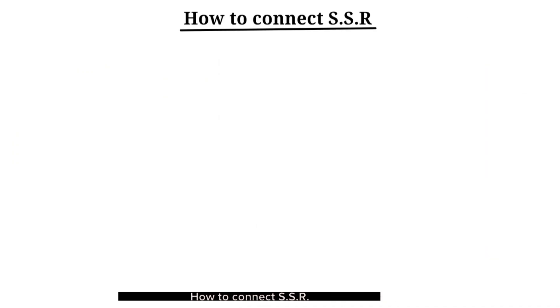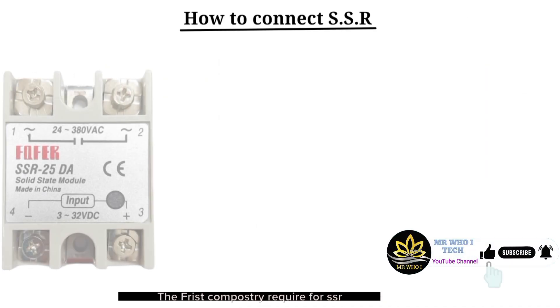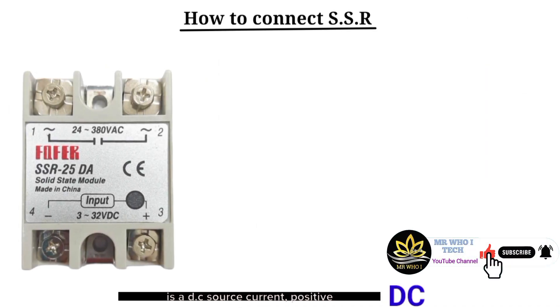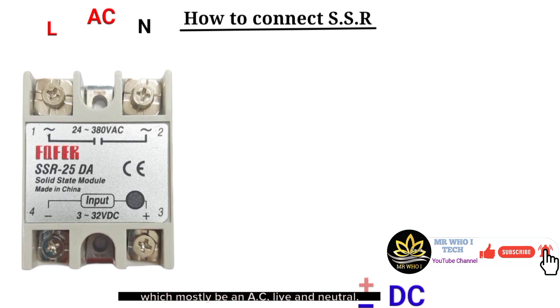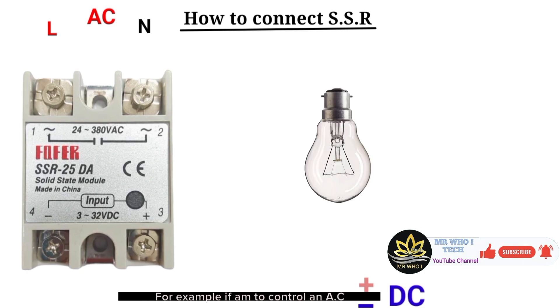How to connect SSR. The first components required for SSR are a DC source current, positive and negative, for the SSR power, and the source current for the load, which will mostly be in AC, live and neutral. For example, if I'm to control an AC bulb with this SSR, the connection should go like this.